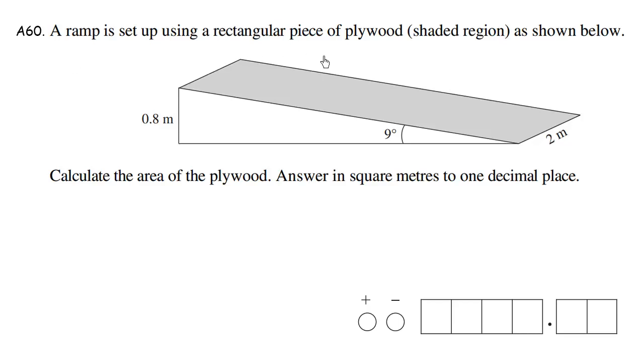A ramp is set up using a rectangular piece of plywood, shaded region as shown below. So this shaded region is the wood. We want to find the area of this plywood. Answer in square meters to one decimal place.